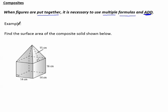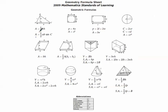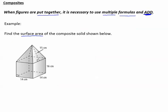So for example, we're trying to find the surface area of the composite solid shown below. Notice this solid is nowhere to be found on our formula sheet, but it is made up of solids that we can find on our formula sheet. The top is the pyramid, and the bottom is the rectangular prism.